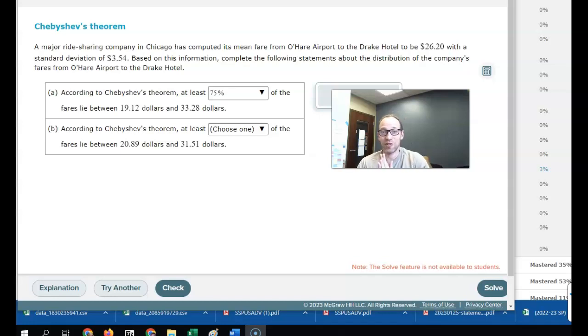All right, we have Chebyshev's theorem. This is kind of like the empirical rule that tells us with normal distributions what percent of the data lies within a certain distance from the mean.